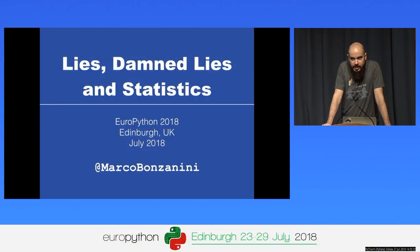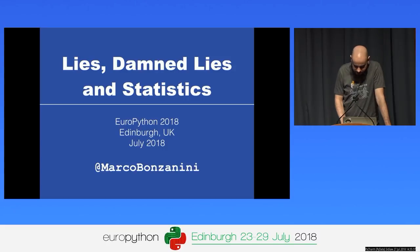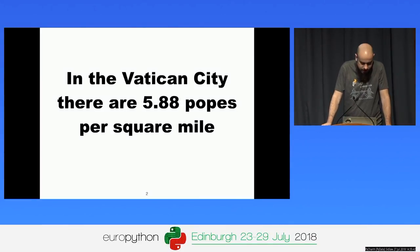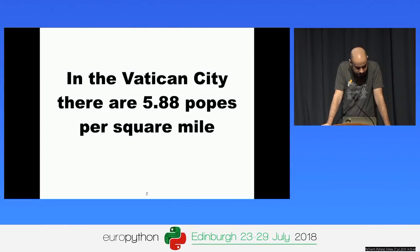So there are three types of lies. There are lies, there are big lies, and there are statistics. As a starting point, please consider the following statement: in the Vatican City, there are 5.88 popes per square mile.